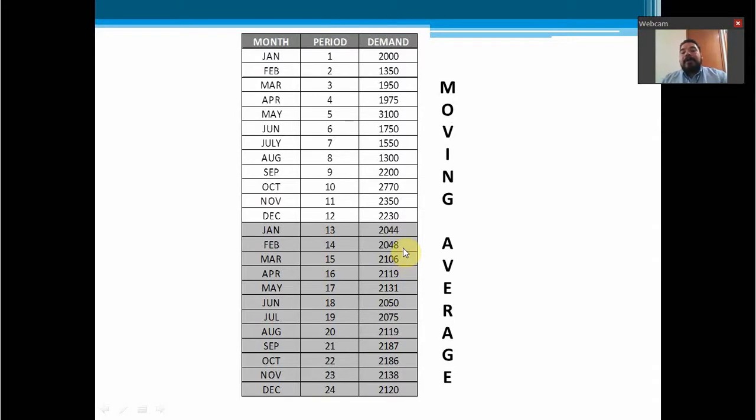So each time we do the next analysis, we are going to consider the 12 data before the analysis that we are calculating. So if we want to calculate March, we are going to consider 2 forecasted data already forecasted, and 10 data that is real.